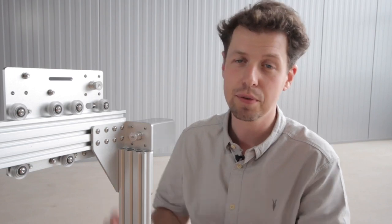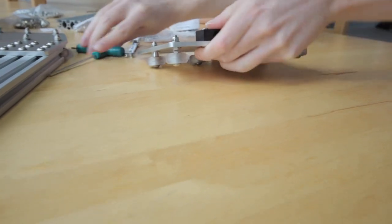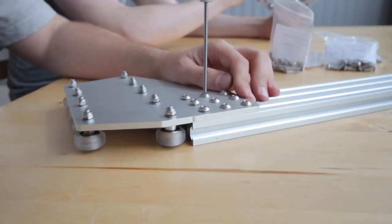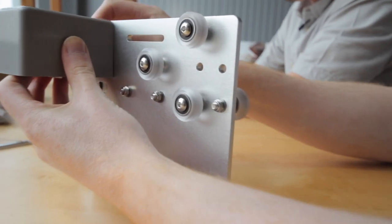We just finished the basics of the gantry - the three extrusion profiles, three motors, the plates and the wheels. Next step would be to put the belt and the z-axis here on the right side, and then the gantry will be finished.